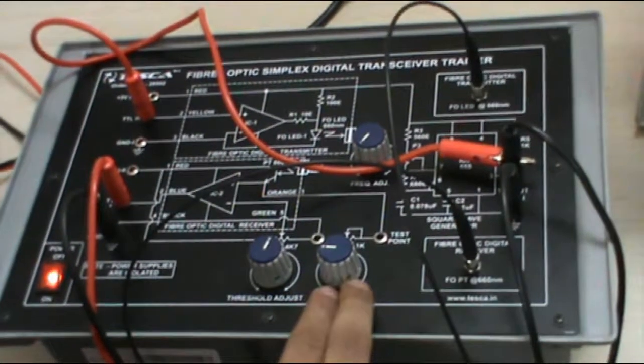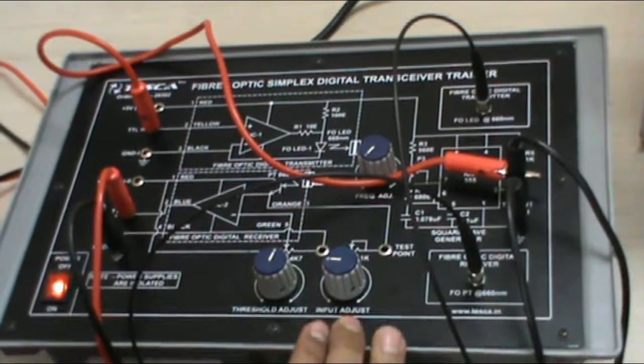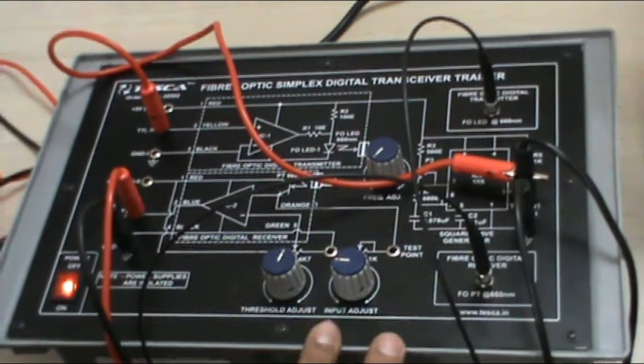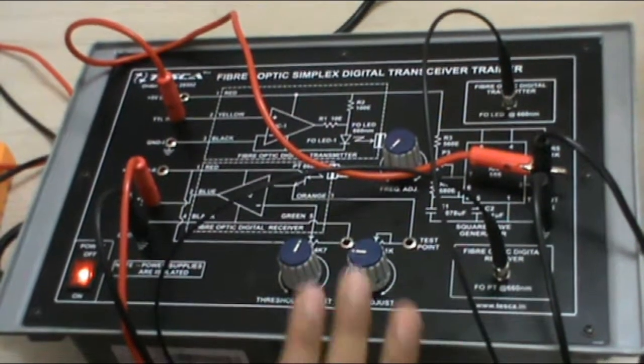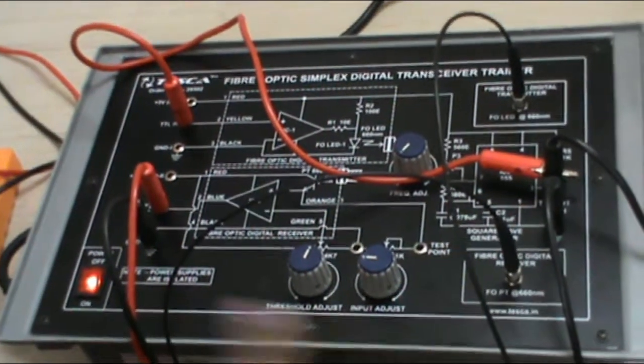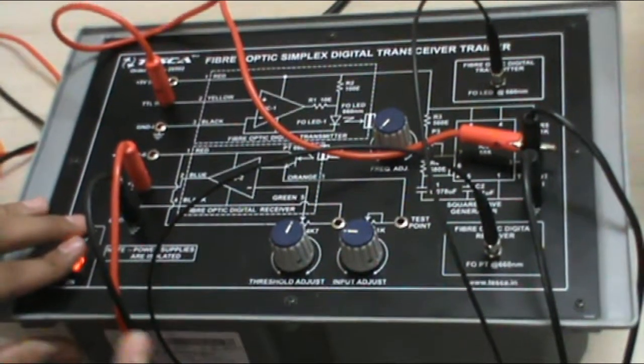This shows that the transmitted link has been created. We can do this experiment by keeping different values of RN. I have set it to 200 ohm. We can vary the RN values and see the direct implementation of the digital transceiver link. This is the end of the first experiment. Now the second experiment.